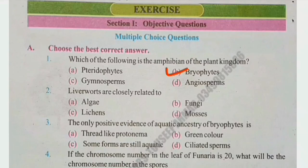Number 2: Liverworts are closely related to — algae, fungi, lichens, or mosses? The right answer is D, mosses. And mosses and bryophytes are a class.